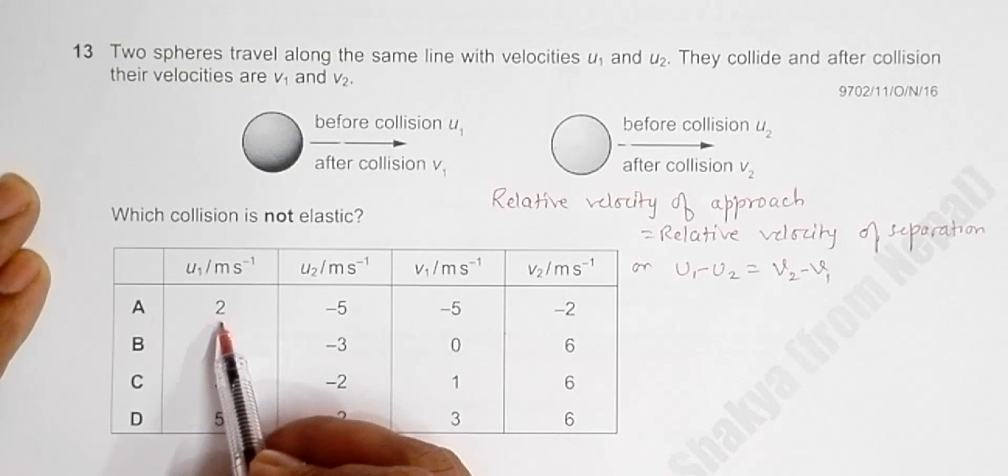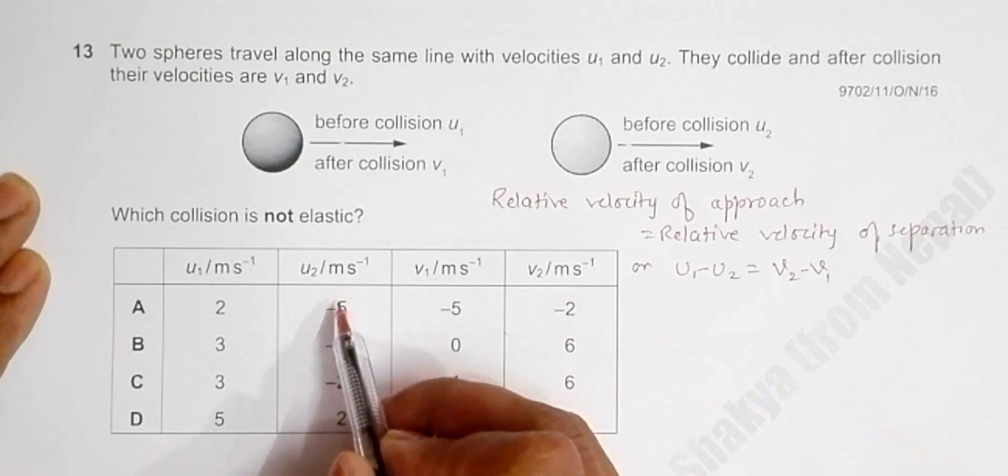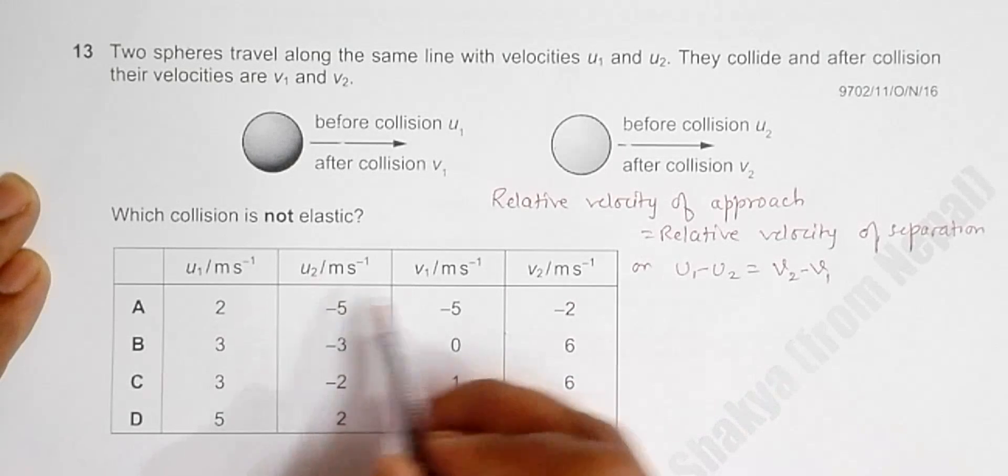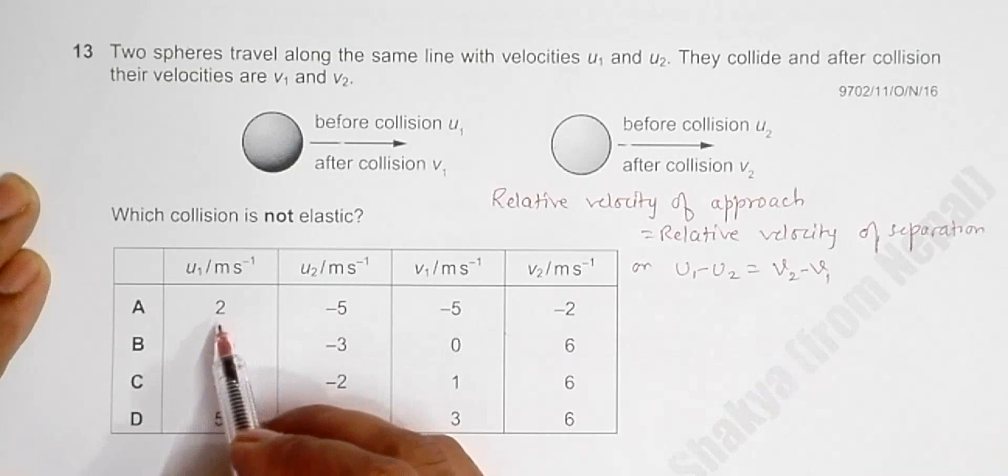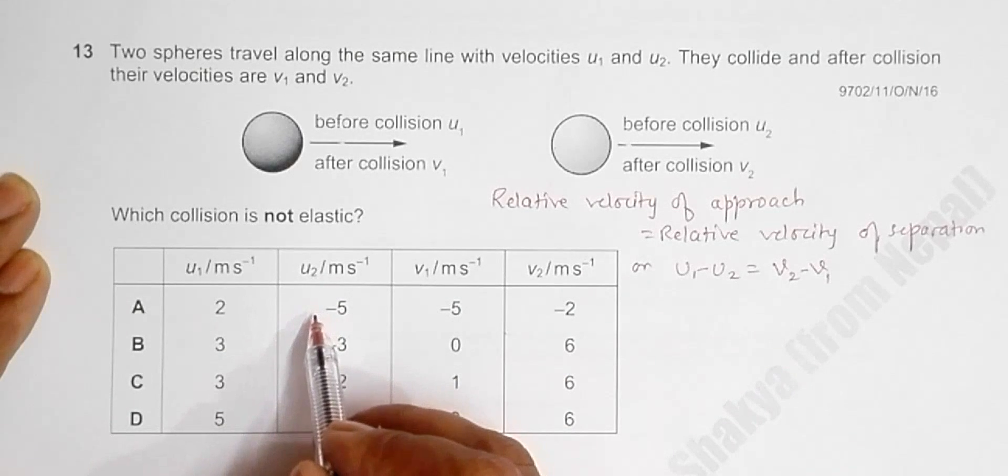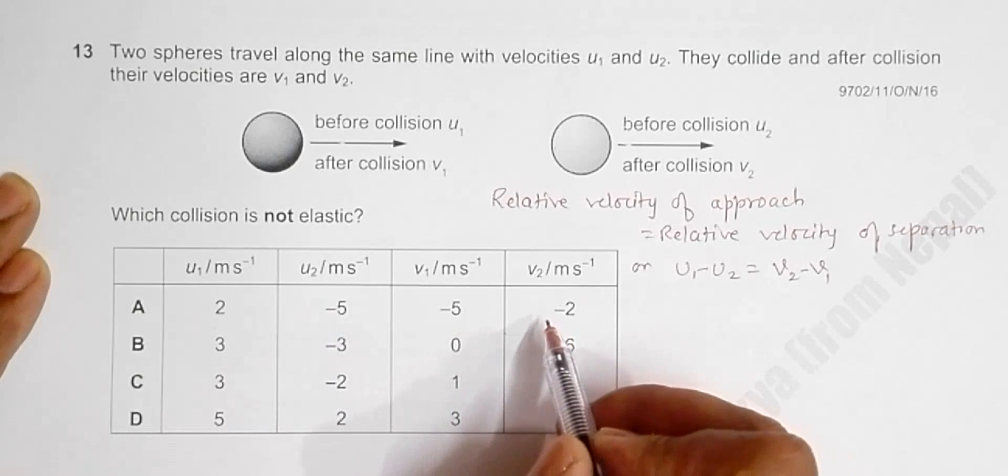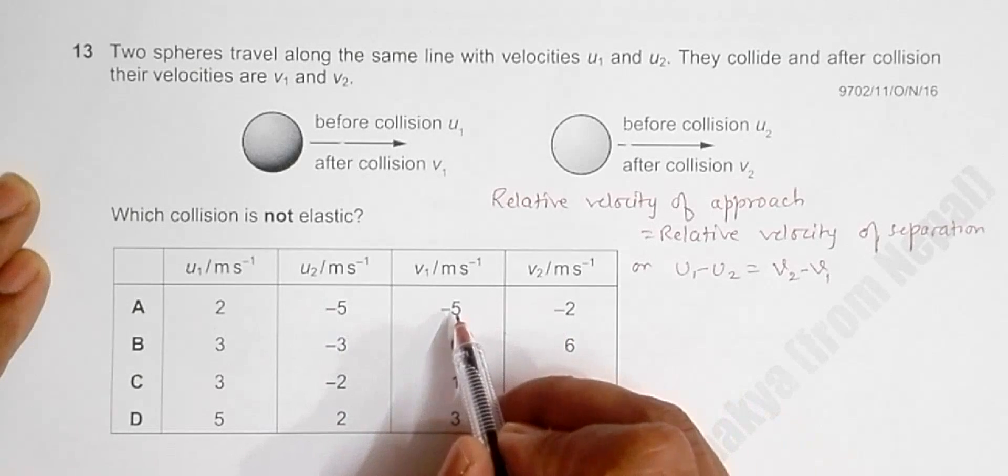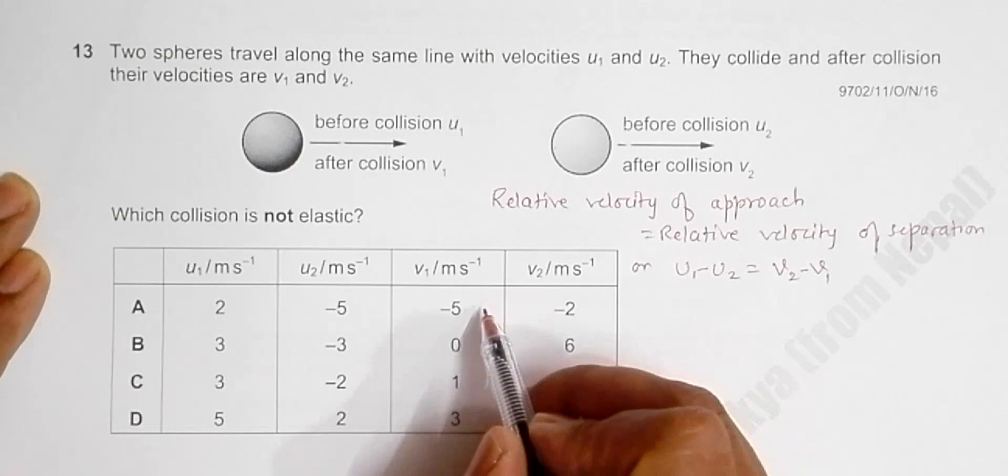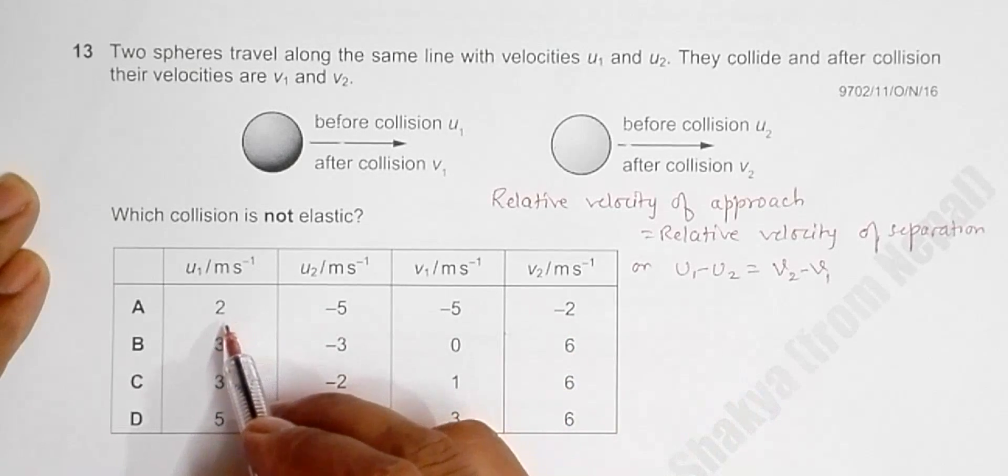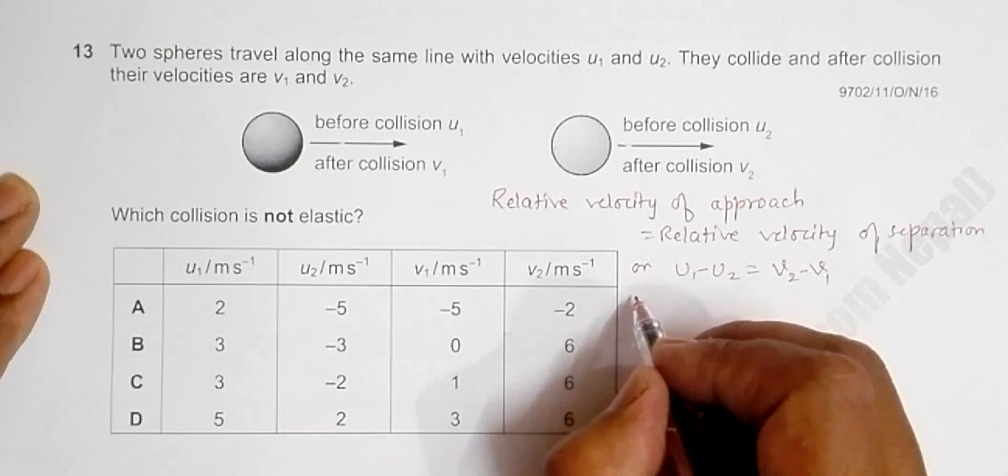If we put 2 for u₁ and -5 for u₂, u₁ minus u₂ will be equal to 2 minus (-5), which is 2 plus 5, that's 7. And if you do v₂ minus v₁, it will be -2 minus (-5), so -2 plus 5, which is 3.